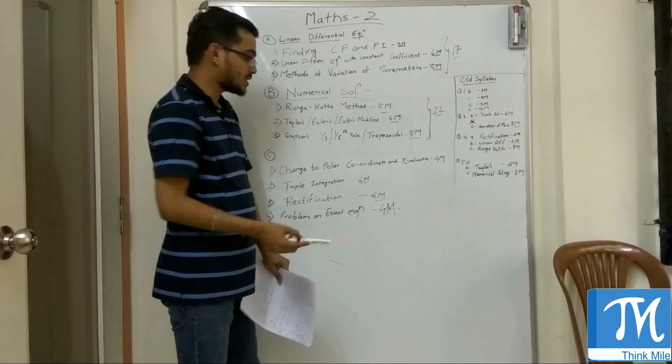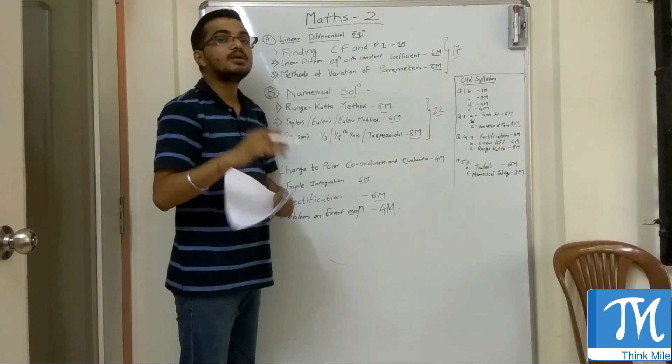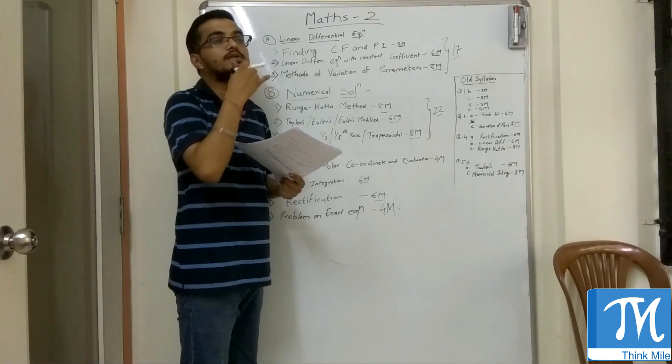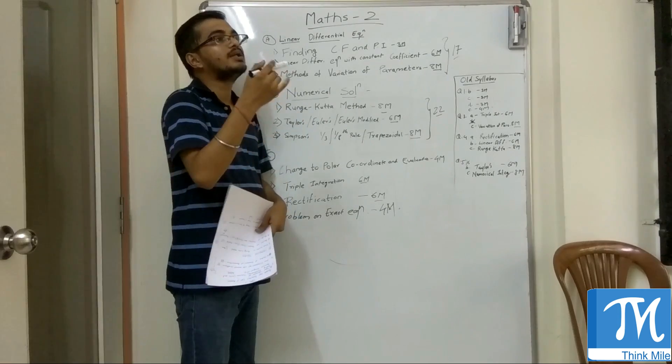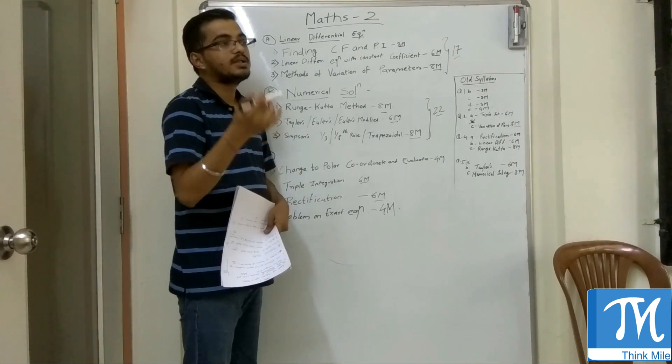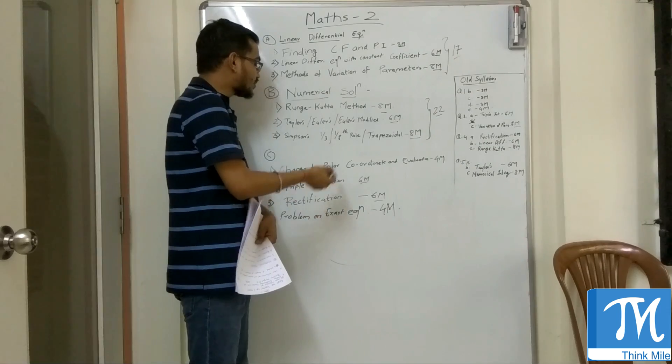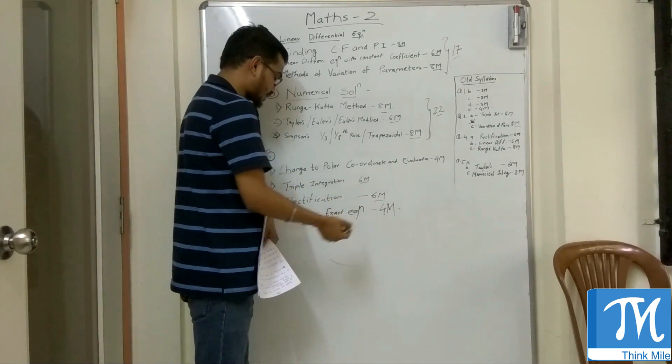Chapter on rectification is there. Question on 6 marks is asked on that. It's again a very simple chapter. You just have to check the calculation of length. So there are formulas given, like in Cartesian form or in Polar form. There are formulas that you have to use that formula and solve the question. So it's an easy question for 6 marks.